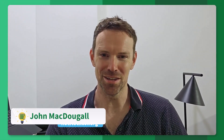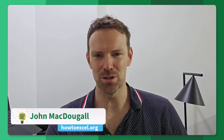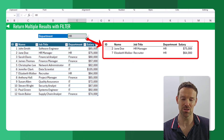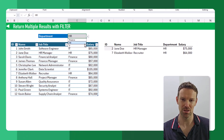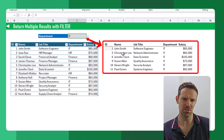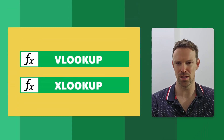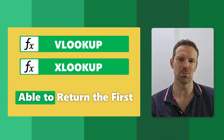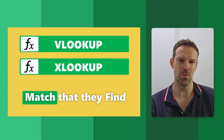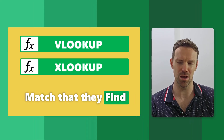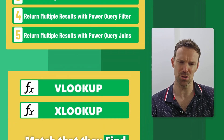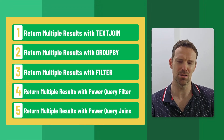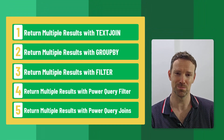Hey everyone, it's John here and in today's video we're going to take a look at how we can return all match results in Excel. If you're using either the VLOOKUP function or the XLOOKUP function, those are only going to be able to return the first match that they find. I'm going to show you five ways that we can actually return all of the results in Excel.